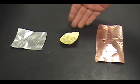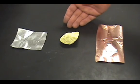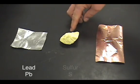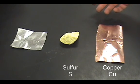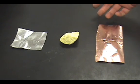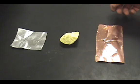Here we have three examples of different elements. I have lead, I have sulfur, and I have a piece of copper. And just by looking at the video, you can see that there are certain properties that you can see. So we're going to focus on those.